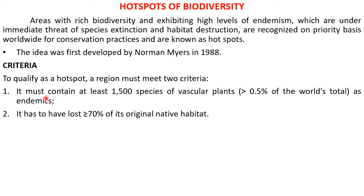For an area to qualify as a hotspot, it must have at least 1,500 species of vascular plants — that is, greater than 0.5% of the world's total — as endemic. It must have endemic plants and endemic species in that particular region. It also has to have lost greater than 70% of its original native habitat.